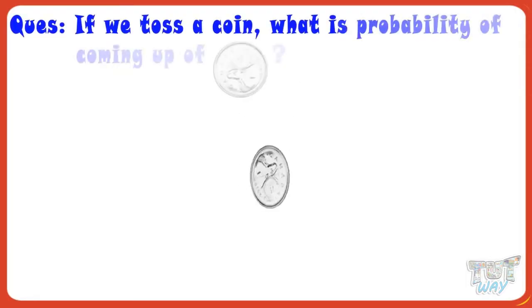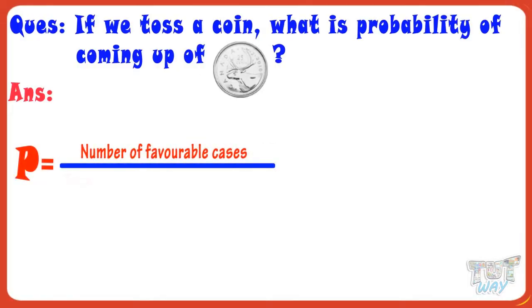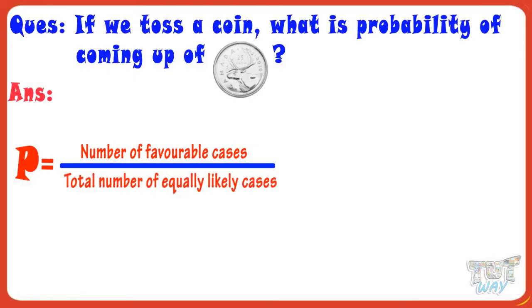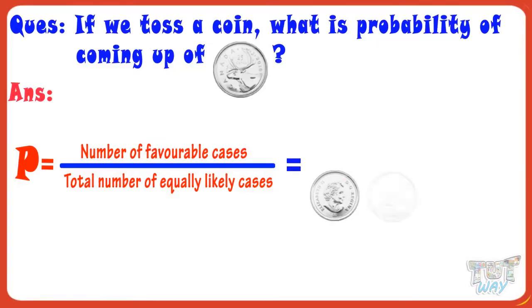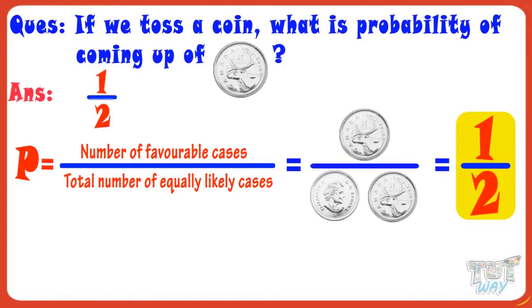If a coin is tossed, what is probability of the coming up of the tail? We know the formula is number of favorable cases divided by total number of equally likely cases. Here, the total number of equally likely cases are 2, that is, heads or tails. And the favorable case, that is, the case for which we are finding the probability is 1, that is, coming up of the tail. So, probability of occurrence of the tail equals 1 by 2.